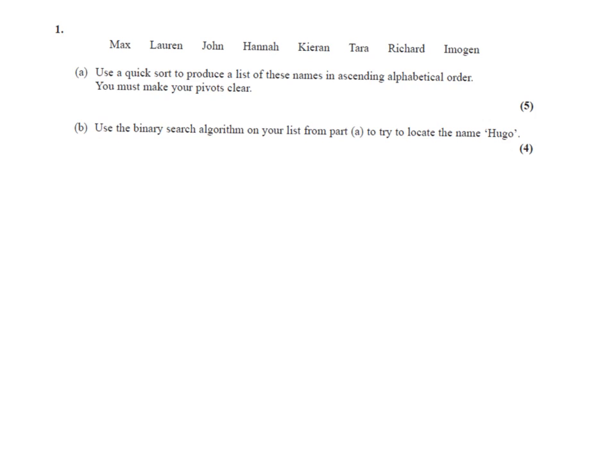The first part of the algorithm is to choose the name at the midpoint of the list to be the first pivot. Now there's 1, 2, 3, 4, 5, 6, 7, 8, so the midpoint is between Hannah and Kieran, and the algorithm states that if there's an even number of items, the pivot should be the item to the right of the middle. So our first pivot is going to be Kieran.